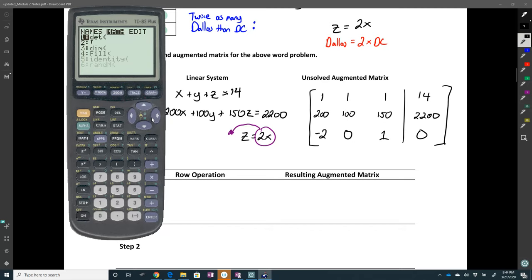1, 1, 1, 14, 200, 100, 150, 2200. Negative 2, 0, 1, 0. Okay. Go through to make sure everything looks good. Nothing's worse than having a typo when you're doing this.